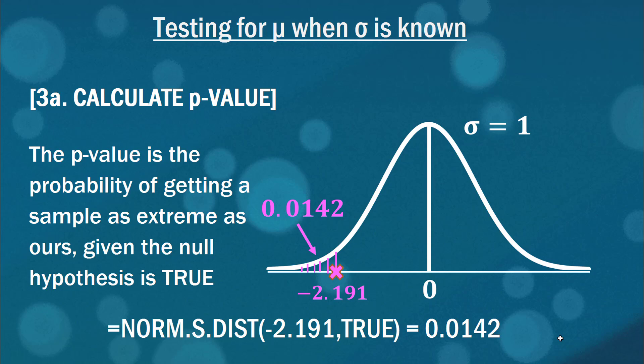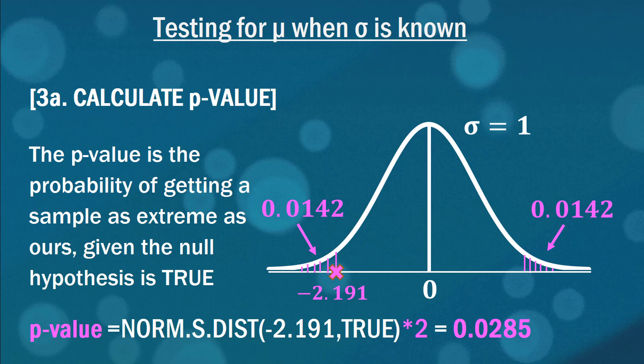So we can calculate the p-value again, noting that it's the probability of getting a sample as extreme or more extreme than ours, given the null hypothesis is true. So here's our z statistic, minus 2.191. So if we wanted to find that shaded region below it, then we can use this norm.s.dist function to find that at 0.0142. But given this is a two tailed test, we have to appreciate that we can be more extreme than this test statistic in either direction. So values up here on the positive side are technically more extreme than ours as well. So for a two tailed test, you have to make sure you multiply this area by 2. And there we get a p-value of 0.0285.